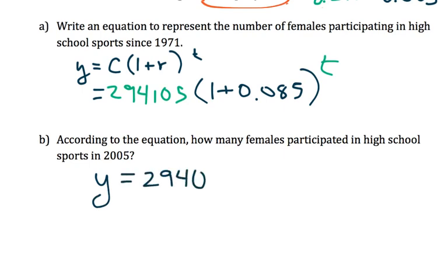294,105 times 1 plus 0.85 to the power of... Well, you've got to decide what this is. 1971 is 29 years from 2000. 2000 is 5 years from 2005. So I can put 29 and 5 together, and we'll use the value 34. If you're not sure I did that, just get a calculator out and do 2005 minus 1971.